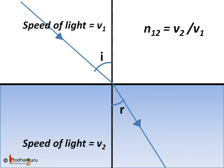The refractive index of medium 1 with respect to medium 2 is represented as n12, which is equal to speed of light in medium 2, that is v2, divided by speed of light in medium 1, that is v1. So n12 equals v2 by v1.